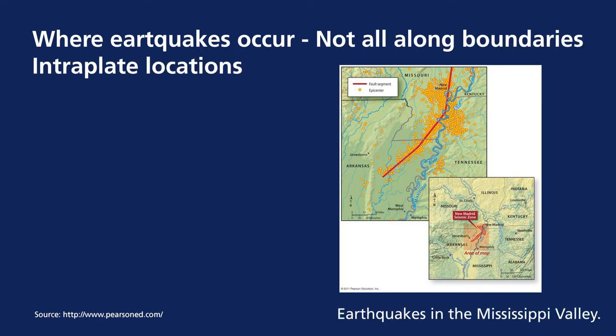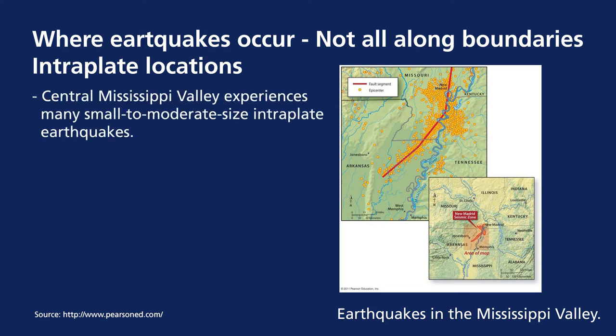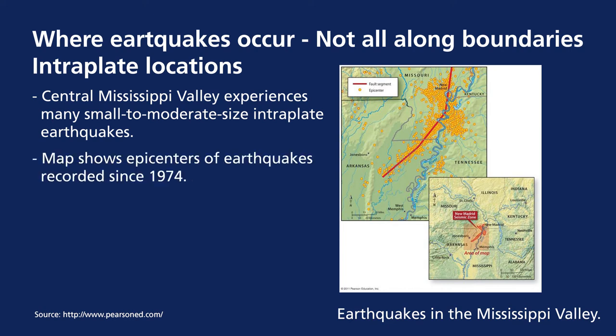Not only do earthquakes happen along tectonic boundaries — they can also be located in intraplate locations. An example is in the states of Missouri, Kentucky, Tennessee, and Arkansas along the Mississippi Valley, which experiences many small to moderate sized intraplate earthquakes. Intraplate earthquakes are not known for their high magnitude, but this map shows many earthquakes that have happened since 1974 in the middle of the plate.